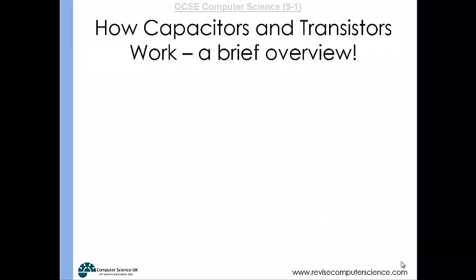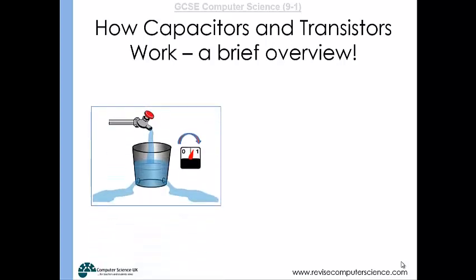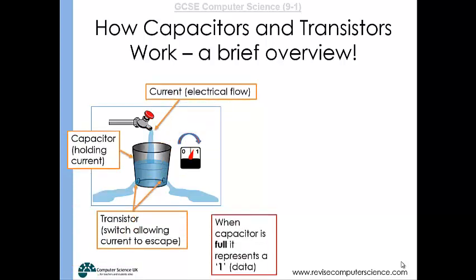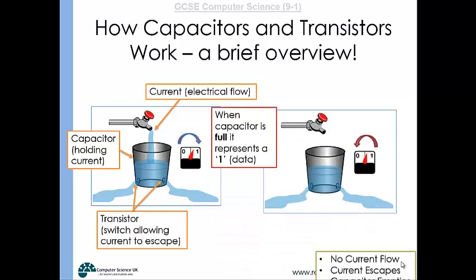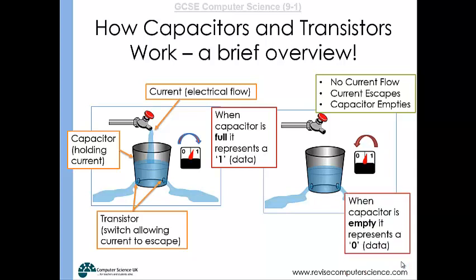Looking inside the RAM to see how it works: capacitors can be thought of like buckets which hold an electrical charge, and transistors are like little plugs at the bottom of the bucket — switches which allow electricity to leak away. If a capacitor has an electrical charge and the transistors are stopping it from escaping, that capacitor represents a one. If the transistors allow the charge to escape, that capacitor represents a zero. With millions of combinations of capacitors and transistors either holding charges or not, that's how the arrangement gives us our data.